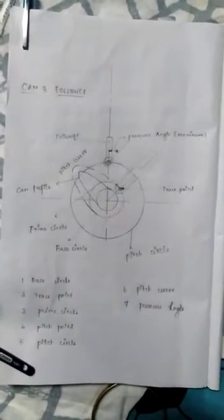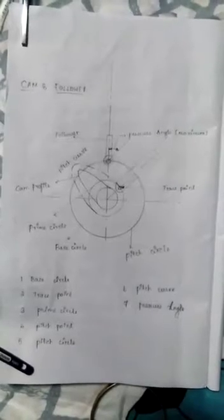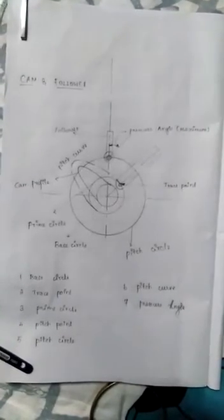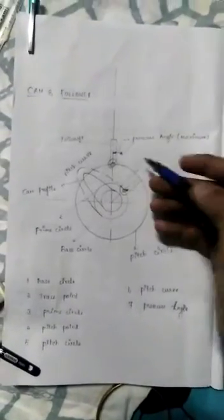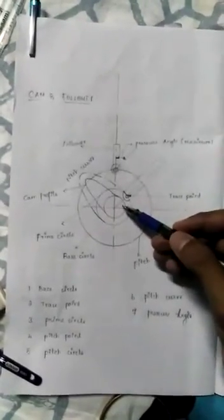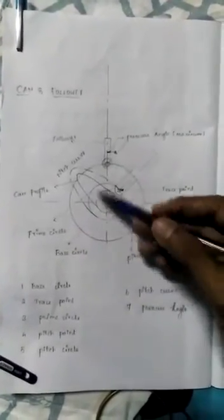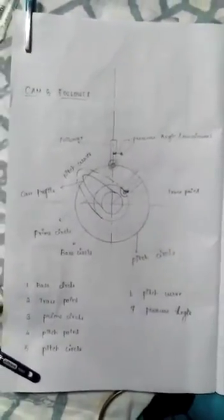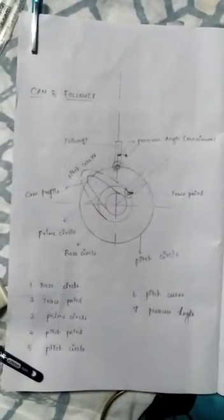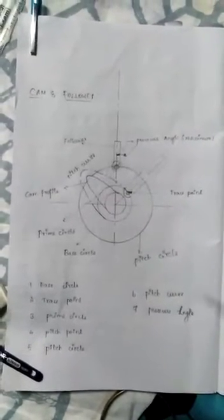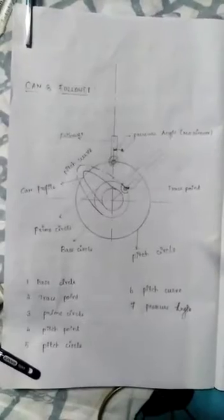Now we are going to learn through diagram cam and follower. Here it is a follower and it is a profile of a cam. Now we are going to see the important definitions about parts in cam and follower.